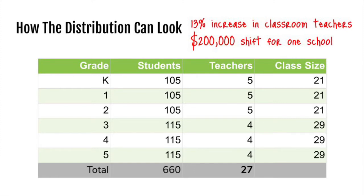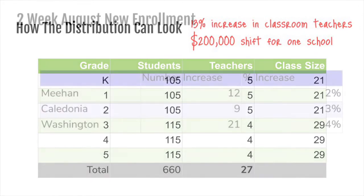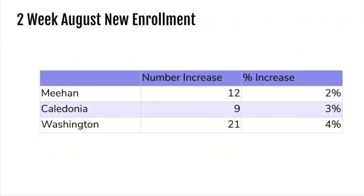This amounts to a shift of a little more than $200,000 in added expenditures on salary and benefits. In the last week, we've had over 100 new students register. These are new to the district, and the number of new students to the district is hard to predict each year. The real struggle, though, is that the new registrations hit our schools differently.